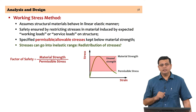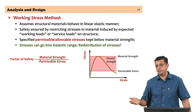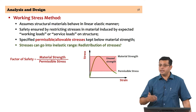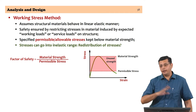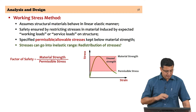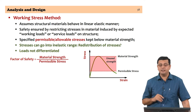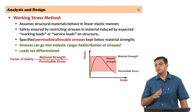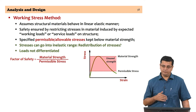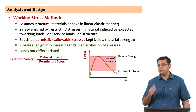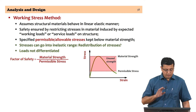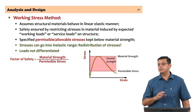However, stresses can go into the inelastic range, and when that happens, the structural system has ways of redistributing stresses. The working stress method completely neglects the possibility of stress redistribution. Another important limitation is that it does not differentiate between loads acting on the structure — whether the stress comes from gravity or from lateral forces. This concept of limiting stresses via permissible stresses does not recognize differences between the types of loads that can occur, which is actually a drawback.